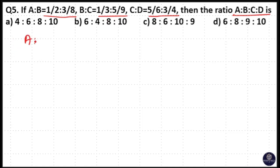Here A is to B means 1/2 is to 3/8. Here 2 will cancel. So 4 comes here, and 4 is to 3 is A is to B.